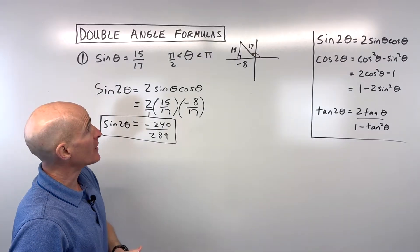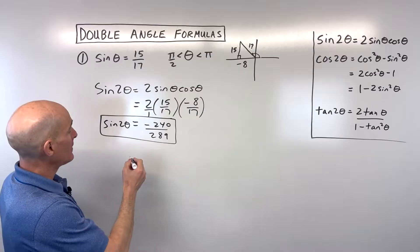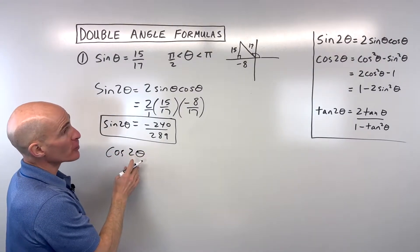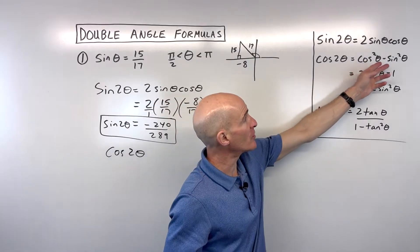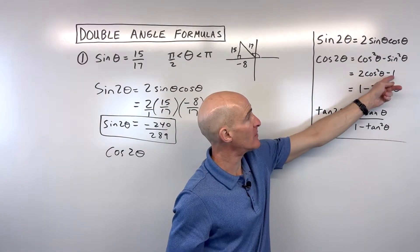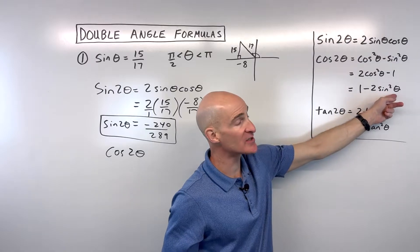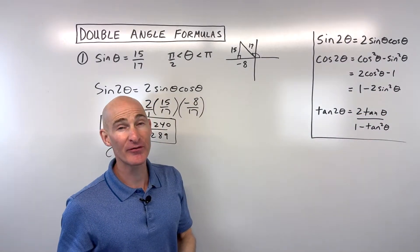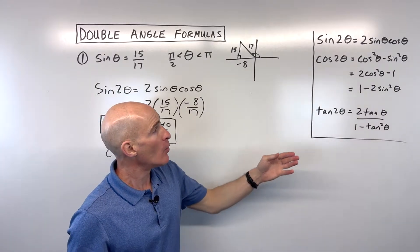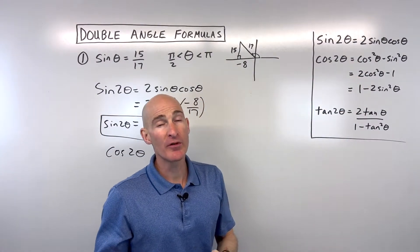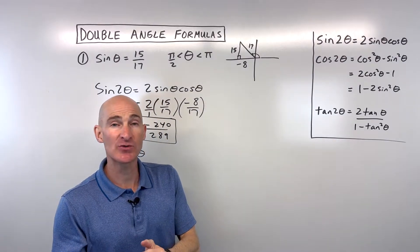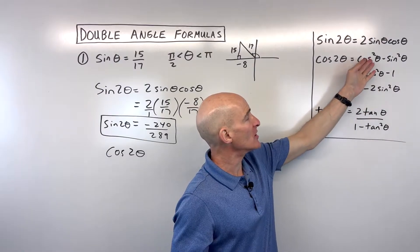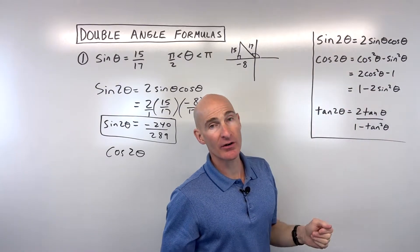Now if we want to find cosine of double this angle, we've got three options for our double angle formula for cosine: cos²θ - sin²θ, or 2cos²θ - 1, or 1 - 2sin²θ. You might be asking why do we have three different formulas and which one do I use? Well, you can rewrite these formulas using your Pythagorean trig identities. By making a substitution, you can show that all three of these are equivalent to one another.